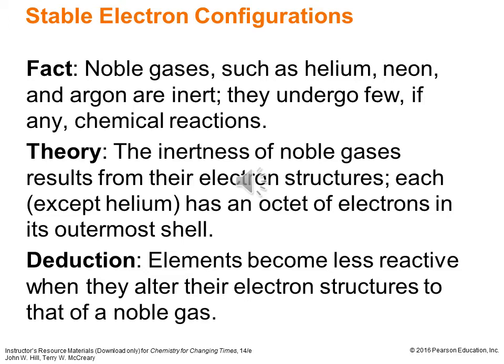Once we discovered the noble gases and noticed that trend, we have the theory to back it up. Why do we observe little if any reaction? Theoretically, it deals with the electronic structure of the noble gases. Each of them has a filled octet in their outermost shell — helium being the exception, it just has a filled duet with the 1s orbital doubly occupied. In all other cases you have ns² np⁶, where n is the principal energy level — two electrons from the s-sublevel and six from the p-sublevel giving eight valence electrons. From that theory we can deduce that elements become less reactive when they alter their electron structures to have that of the noble gas.